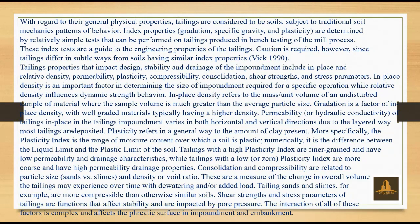Permeability or hydraulic conductivity of tailings in place varies in both horizontal and vertical directions due to the layered way most tailings are deposited. Plasticity refers in a general way to the amount of clay present; specifically, the plasticity index is the range of moisture content over which a soil is plastic. Tailings with a high plasticity index are finer grained and have low permeability and drainage characteristics, while tailings with a low or zero plasticity index are more coarse and have high permeability.